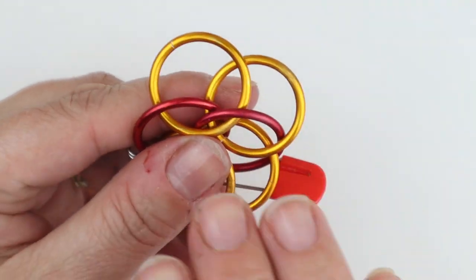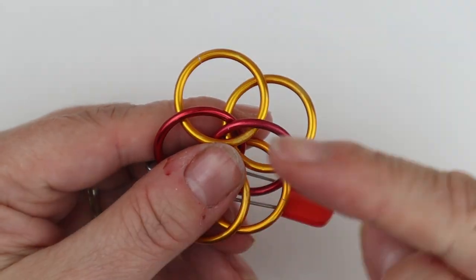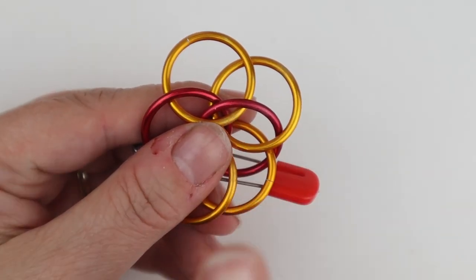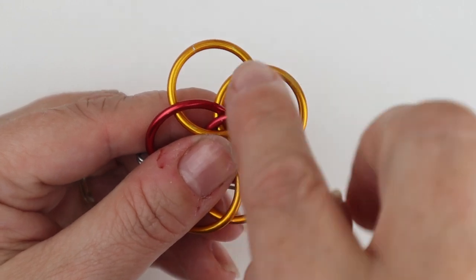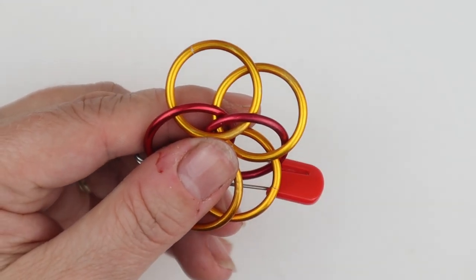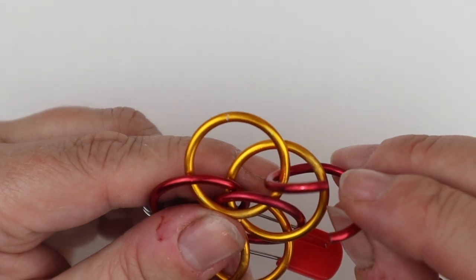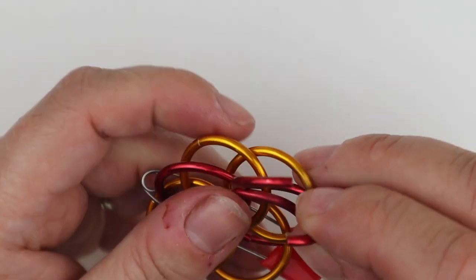You can see that this row is pointing down away from me. So I've got row number one which is pointing down, row number two which we pushed forward is pointing up, row number three is pointing down, row number four - again we come up through the eye and close.